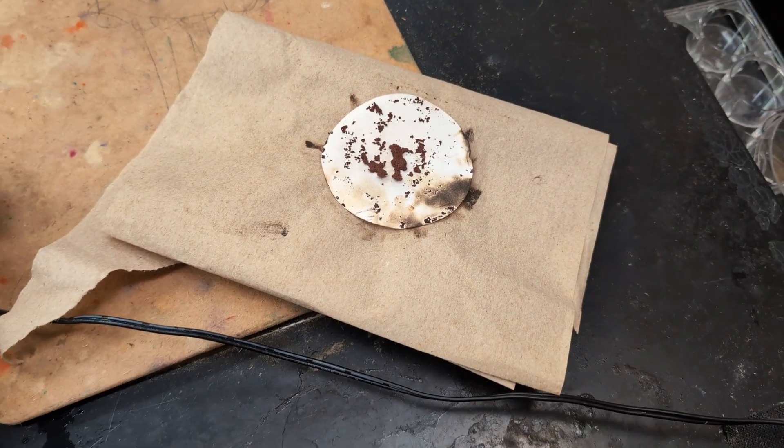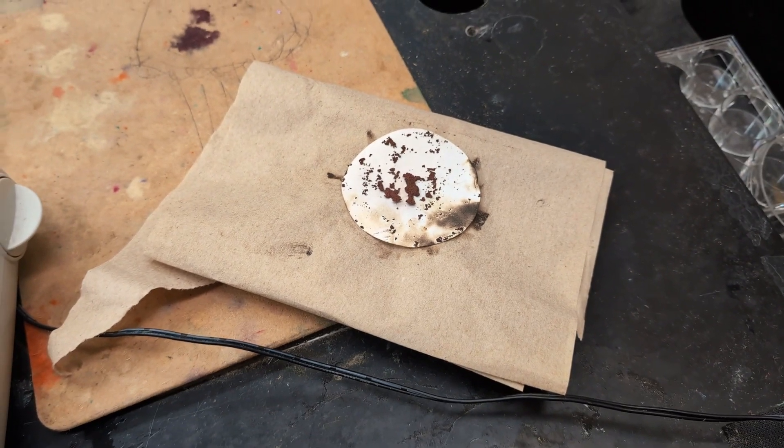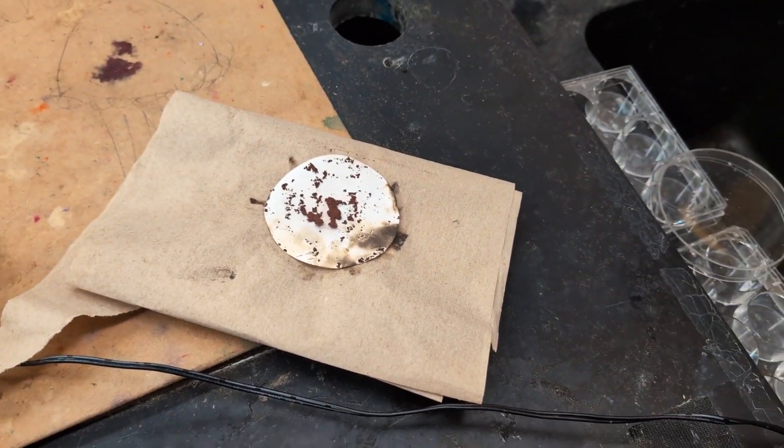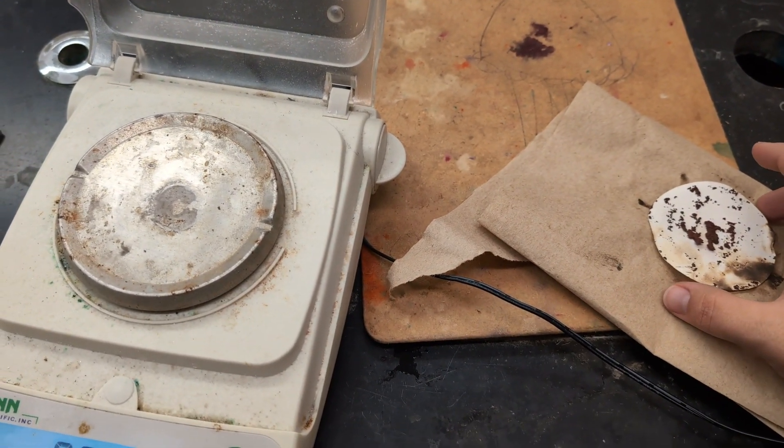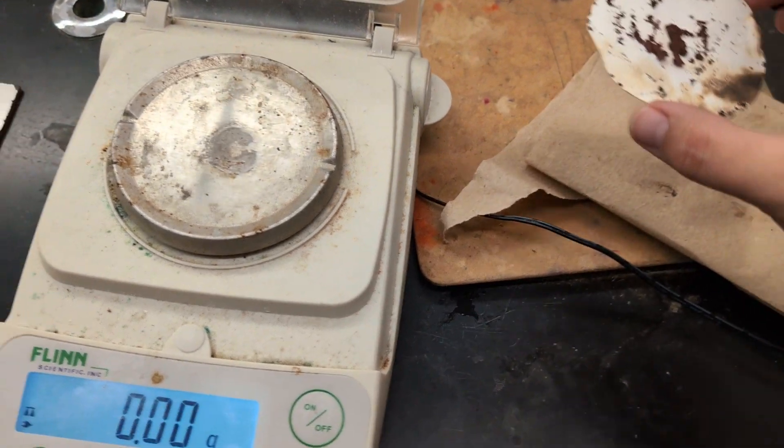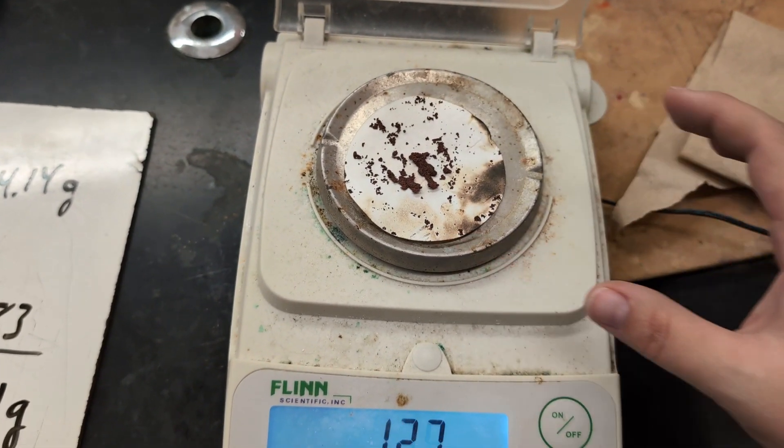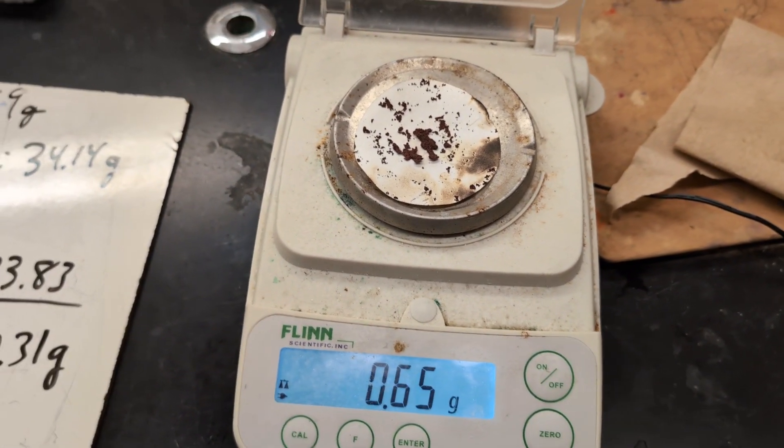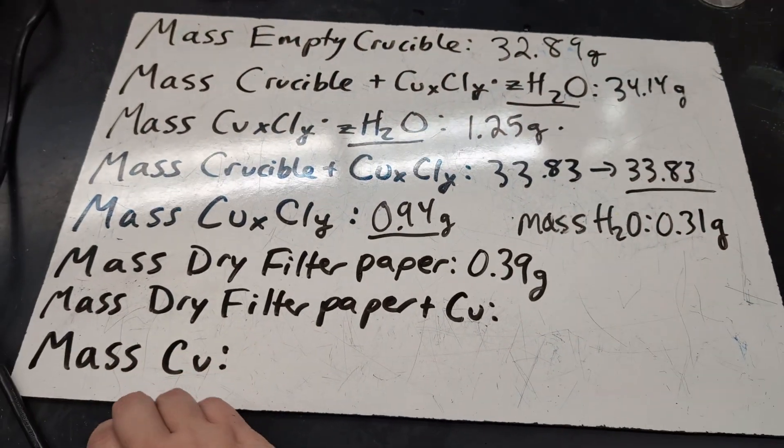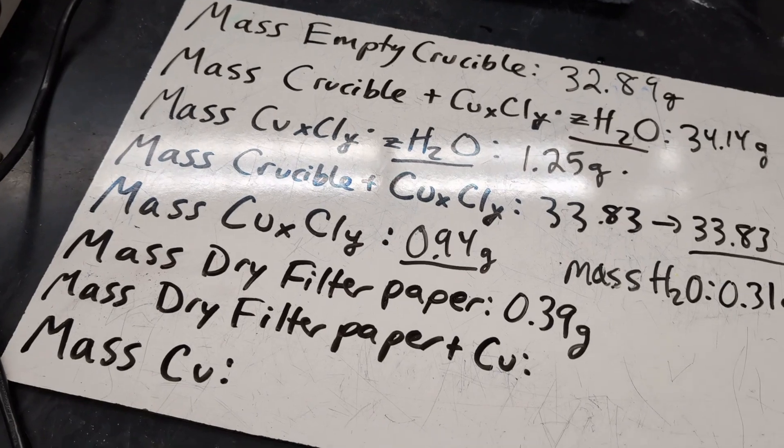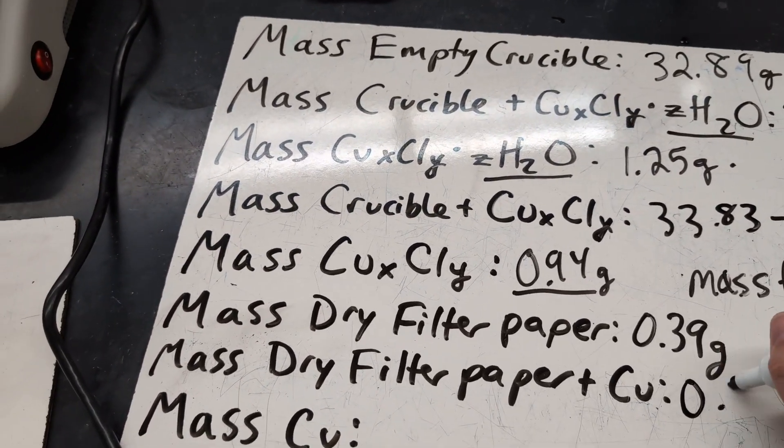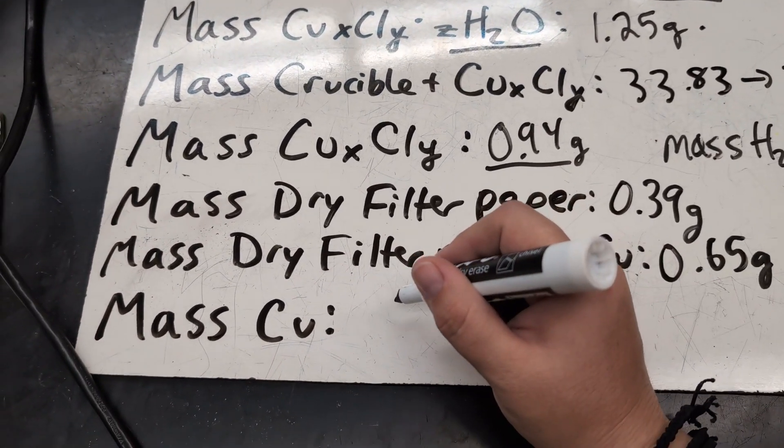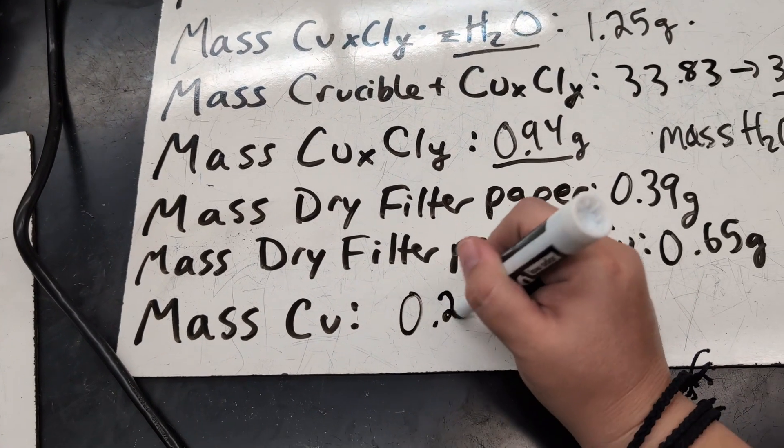So our solid copper has been drying. I took it out earlier and weighed it. And I took it out again and weighed it, put it back in. And so you want to keep going with that cycle until it reaches a constant mass. So you know that all the water has evaporated. And so this would be the final time. Yep, 0.65. So it has not changed from the last time I weighed it. So I can record that mass. And you can see that the filter paper with the solid copper is 0.65 grams. And so if you subtract out the mass of the filter paper, you get that the mass of copper that we formed was 0.26 grams.